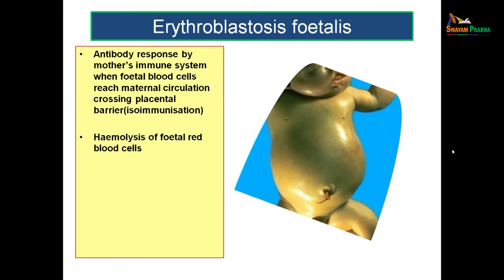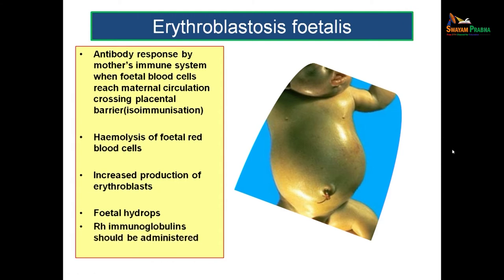As a result, there will be hemolysis of the fetal red blood cells, leading to increased production of erythroblasts in the fetus. Ultimately, the fetus will result in fetal hydrops — the body will be fully edematous. In this condition, we usually administer RH immunoglobulins to counter this reaction. This condition is known as erythroblastosis fetalis.